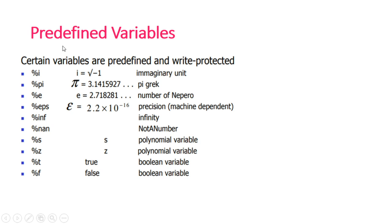Scilab has several predefined variables. Use %i for the imaginary unit, %pi for pi, %e for the exponential constant, %eps for epsilon, %inf for infinity, and %nan for not-a-number. %s and %z are defined for polynomial variables. For Boolean variables, use %t for true and %f for false.